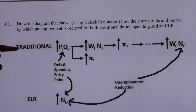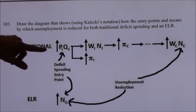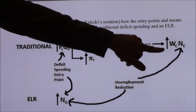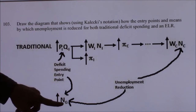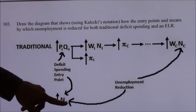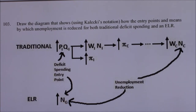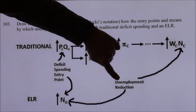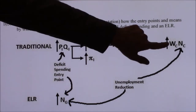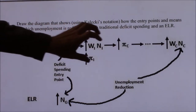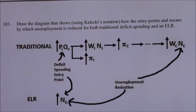So the traditional means of deficit spending takes a long time for it to actually have an impact on the people that we're really worried about, whereas the employer of last resort — the increase in employment in the government sector — that's immediately addressing the problem. So the point at which unemployment reduction occurs is immediate versus eventual, and most of the money ends up in profits. So that's the whole thing for that diagram.